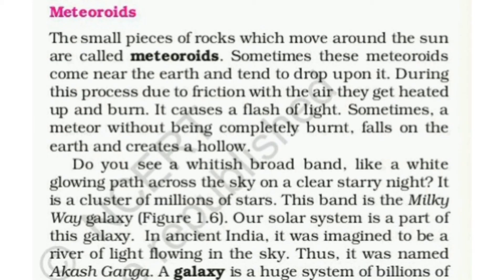Meteoroids. The small pieces of rocks which move around the sun are called meteoroids. Sun ke charon aur move karne wale pattharon ke chhote chhote tukdon ko meteoroids kaha jaata hai. Ye meteoroids kabhi-kabhi Earth ke itne nazdeek aa jaate hain ki Earth par gir bhi sakte hain. Is process ke dauran, air ke saath friction hone ke karan ye garm hokar jal jaate hain, jisse ek chamakdar light dikhti hai. Kabhi-kabhi koi meteoroid poori tarah jale bina Earth par bhi gir jaata hai, jisse Earth par gaddha ban jaata hai.